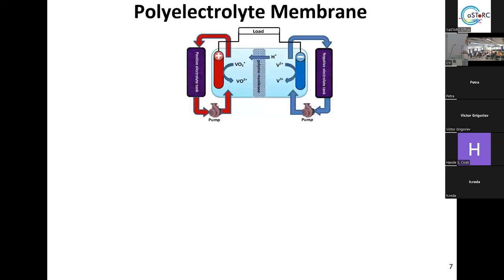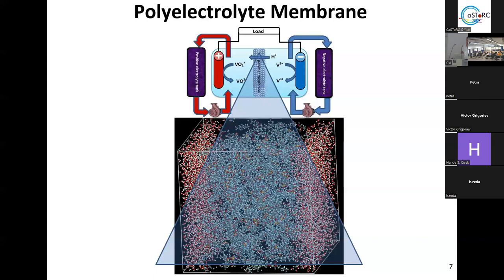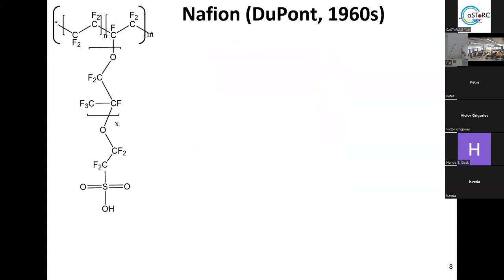The same materials can be used to make the membrane in both flow batteries and fuel cells. The membrane is the key element of today's presentation. I will speak about polyelectrolyte materials, and the most important one — even now — is the so-called Nafion membrane, synthesized by DuPont many years ago.